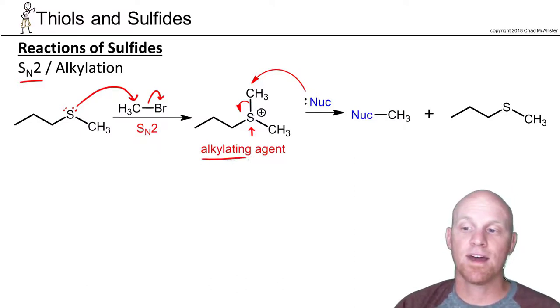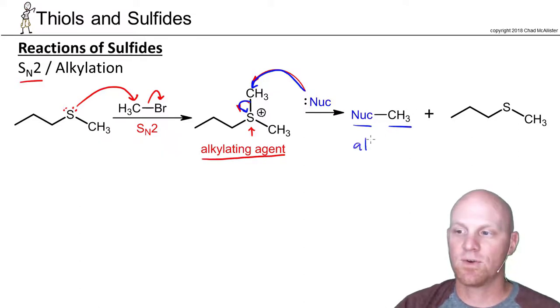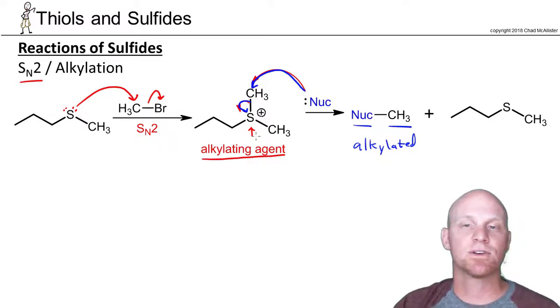You'll notice the sulfur here has three bonds and a positive charge. It itself can therefore then act as an electrophile, as an alkylating agent. If I had a strong nucleophile, that nucleophile could come and attack the methyl group we just attached, break the bond we just formed, and now the nucleophile would be attached to that methyl group. We'd say that nucleophile had just been alkylated. There are some biological relevance here - certain sulfides react in just this sort of way to methylate things in your body.